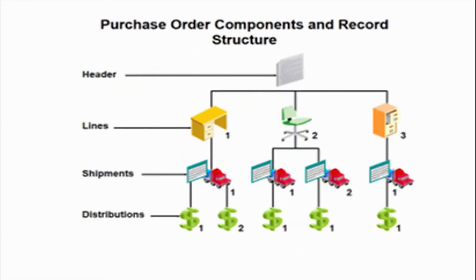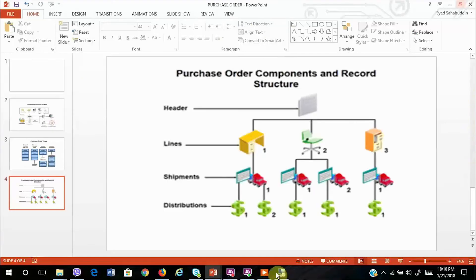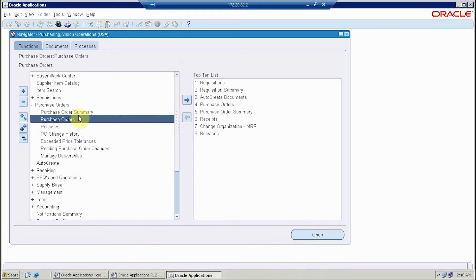A purchase order has certain components. Functionally you see it in one form, but in the backend the header goes into a different table, the lines go into a different table, the shipment goes into a different table, and distribution also has its respective table. One header can have multiple lines, one line can have multiple shipments, and one shipment can have multiple distributions. Let's go to the Oracle EBS environment and see how to create a standard purchase order.